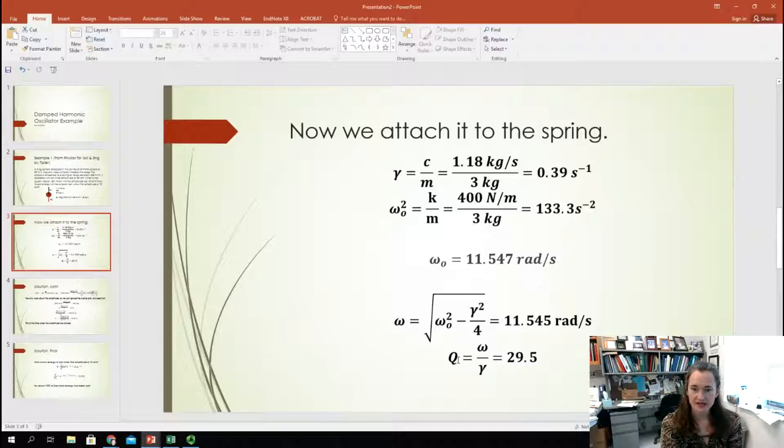Okay? So, in that case, I can calculate my quality factor. My quality factor, q, is equal to omega over gamma. So, plugging in my value for omega, 11.545 radians per second, divided by gamma, right, which is 0.4 inverse seconds, I end up with a quality factor of 29.5. And if you round to 30, that's totally fine. Okay. So, that's my quality factor. That was the second part of this question.